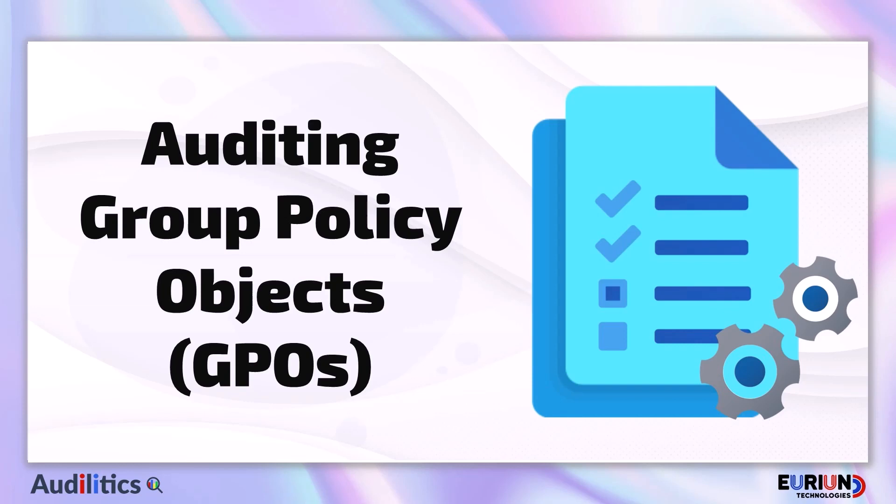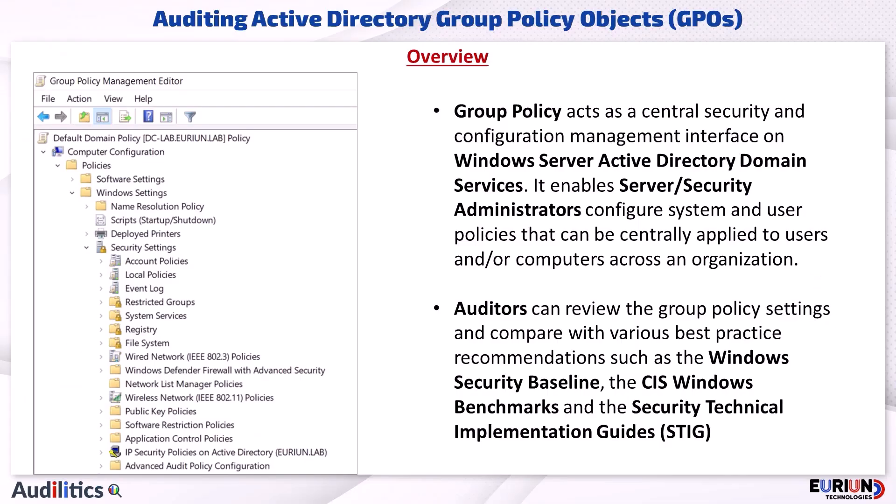Auditing Group Policy Objects. Group Policy acts as a central security and configuration management interface on Windows Server Active Directory domain services. It enables server or security administrators to configure system and user policies that can be centrally applied to logged-in users and or computers across an organization.